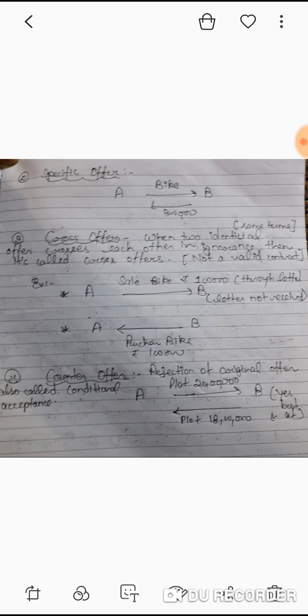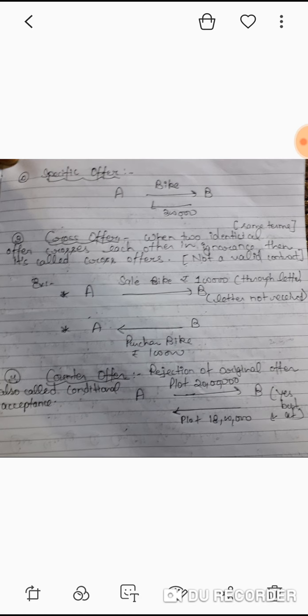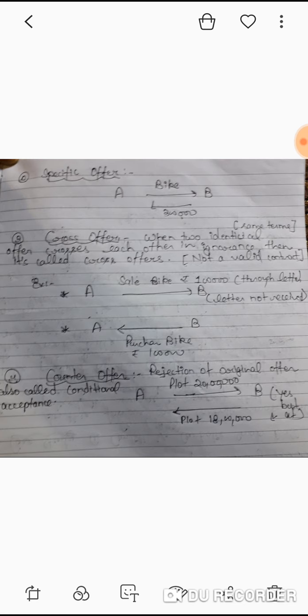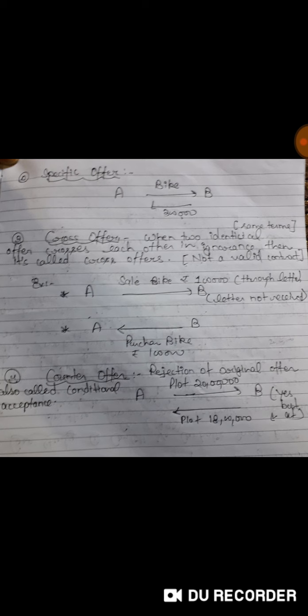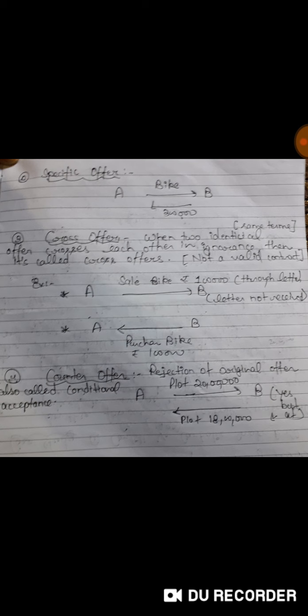Cross offer means two identical offers crossing in ignorance. A sends an offer to B to sell his bike for 1 lakh, and B also sends a similar offer to purchase the same bike for 1 lakh. This is counter offer.